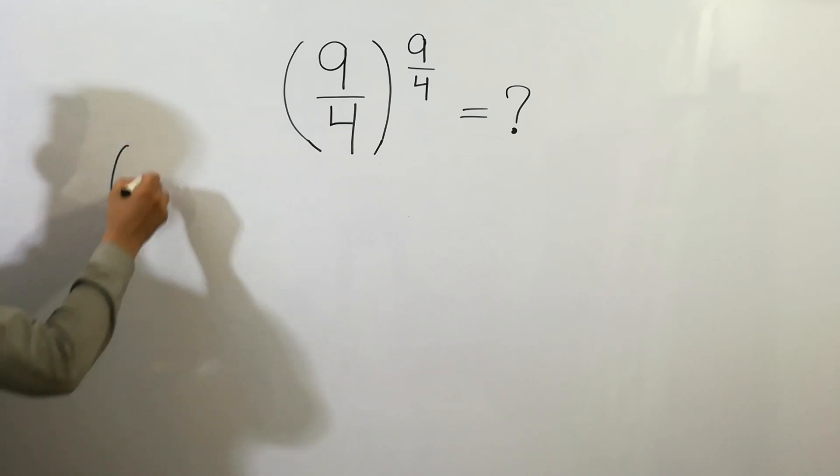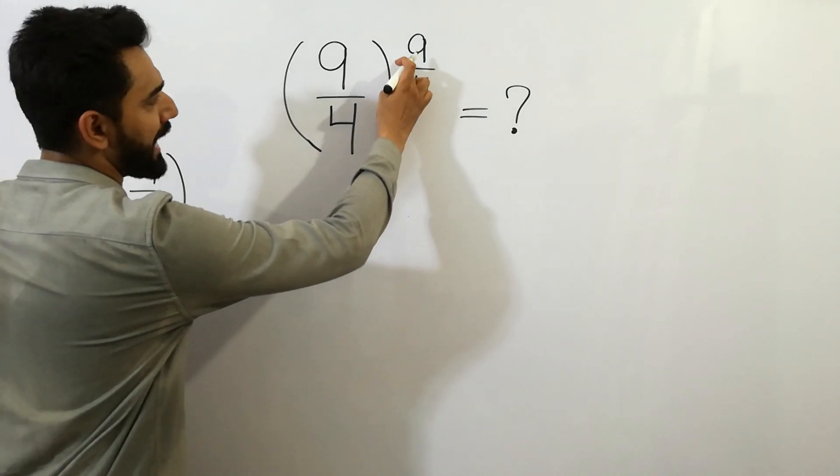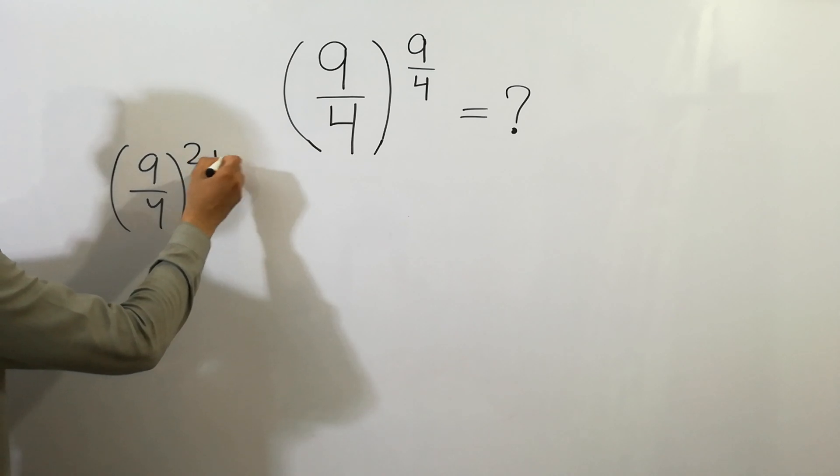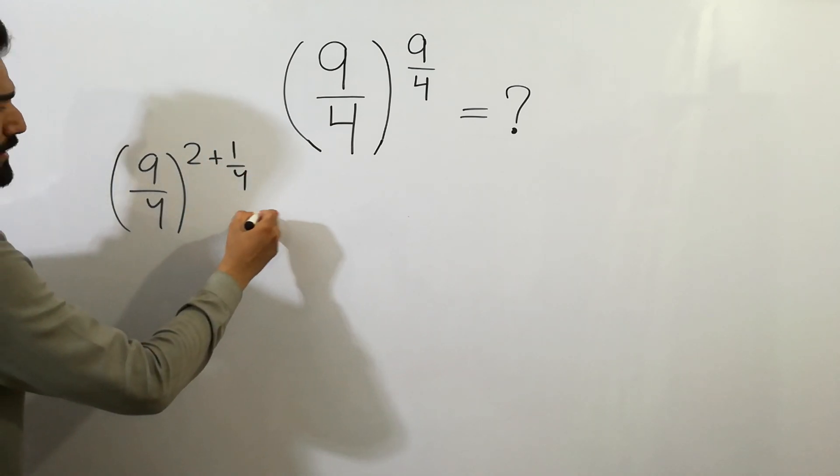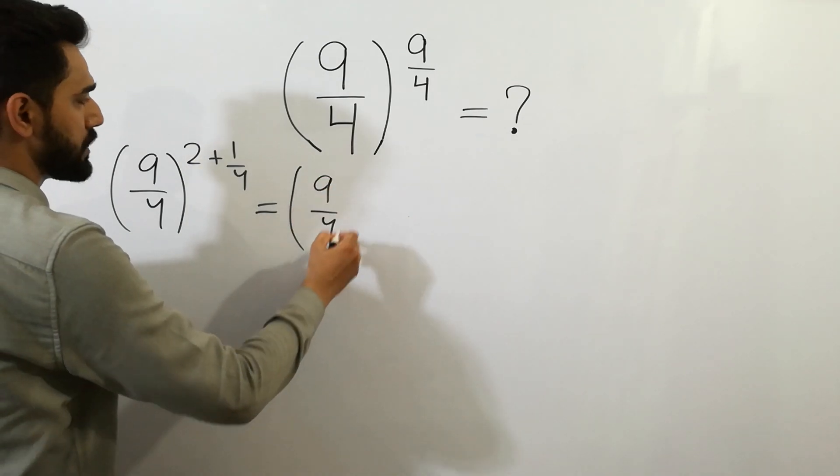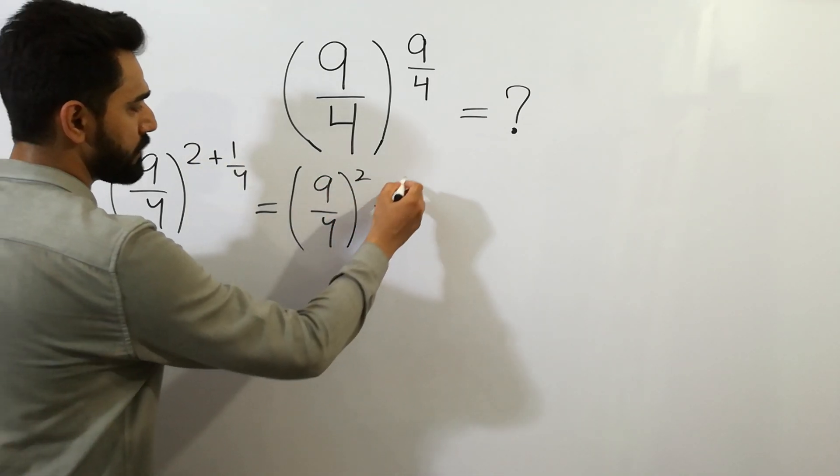Here, the exponent of 9 over 4 can be written as 2 plus 1 over 4. We can isolate 2 and 1 by 4.